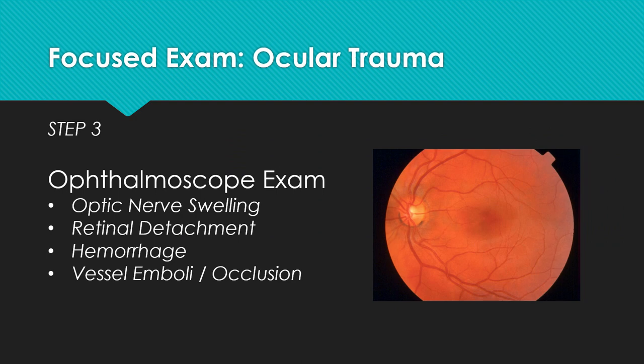After completing these objective tests, one can finally use the ophthalmoscope to examine the fundus for any pathology. Some things to look for include optic nerve swelling, any signs of retinal detachment, any type of bleeding or dot hemorrhages in the eye, as well as any evidence of vessel emboli or occlusion that could have resulted from the trauma.